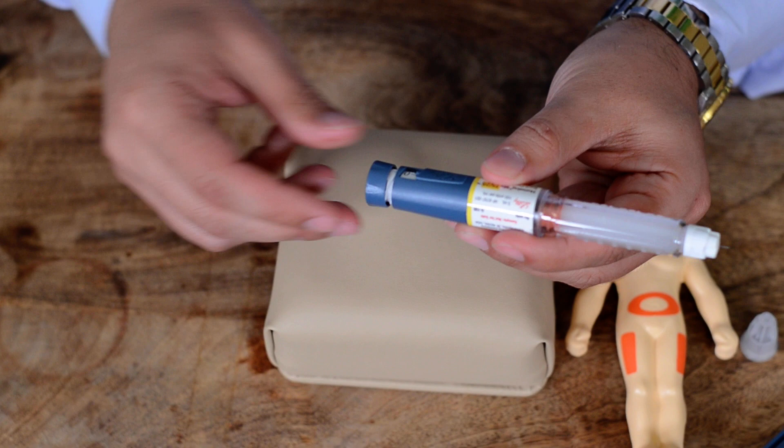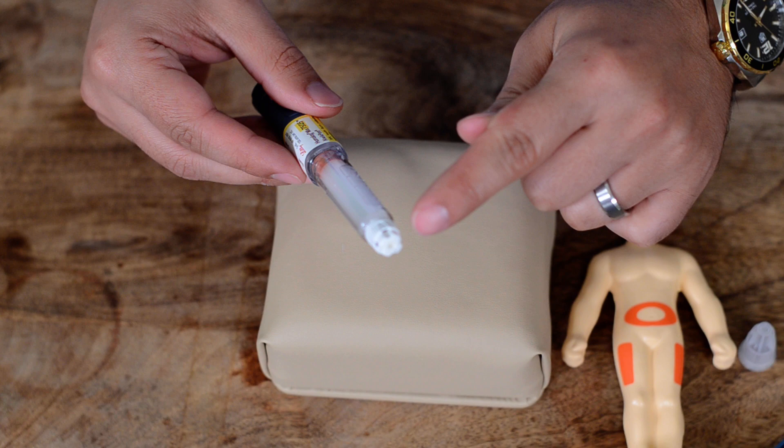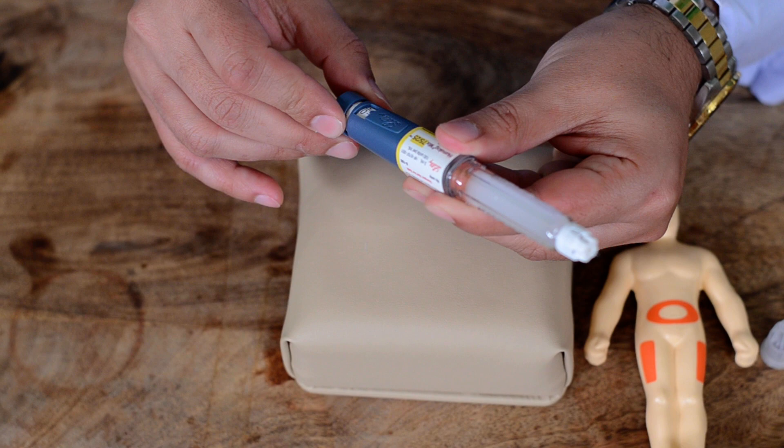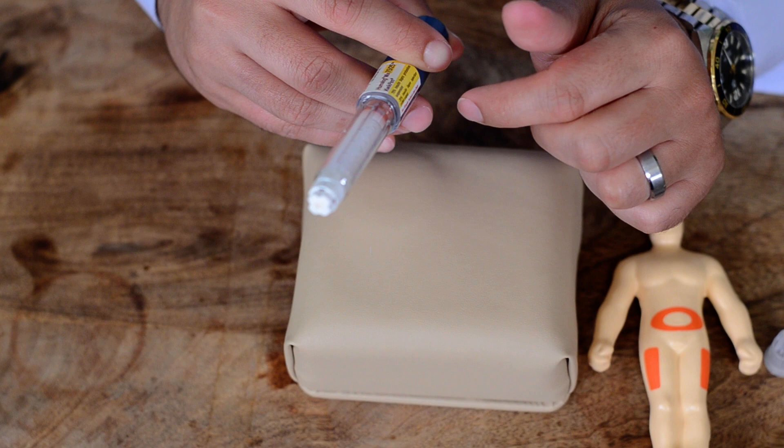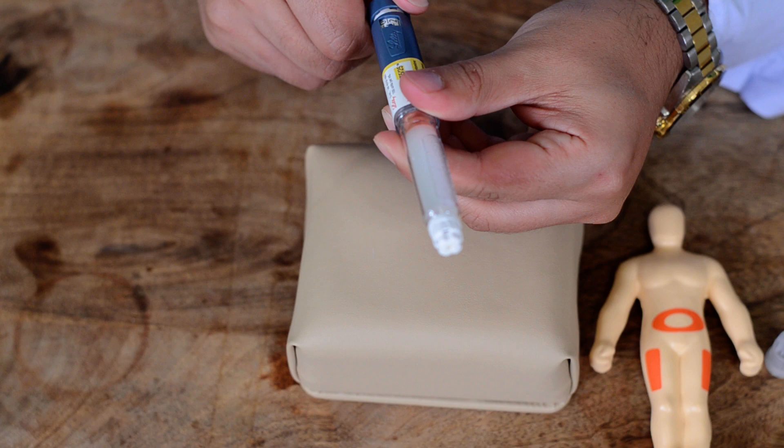So let's say your physician prescribed 10 units. Like in any other pen, you need to prime your pen because every time you put a new needle, there will be some air in the pen mechanism here. So you need to make sure that you get rid of that. So one or two units and then you can just push that until you see a little drop.